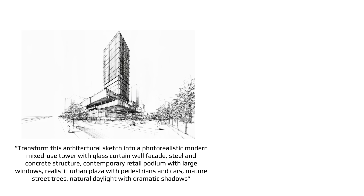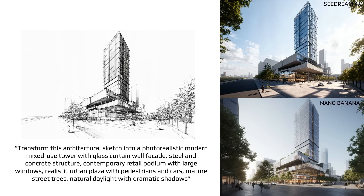The classic sketch-to-render is a good benchmark. I added more details — materials and structure — to see how the AI models can follow them. The prompt was: 'Transform this architectural sketch into a photorealistic modern mixed-use tower,' with details on daylighting and shadows. Both understood the prompt very well and followed the building shape closely, however there are some very big differences. Quality-wise, Nano Banana does a much better job — with the glass facades, steel structure, ground floor retail, and even the roads at much better quality. Seadream is clearly lacking in these areas and looks very empty either side, with oddly rendered clouds. For this one, I would go for Nano Banana.